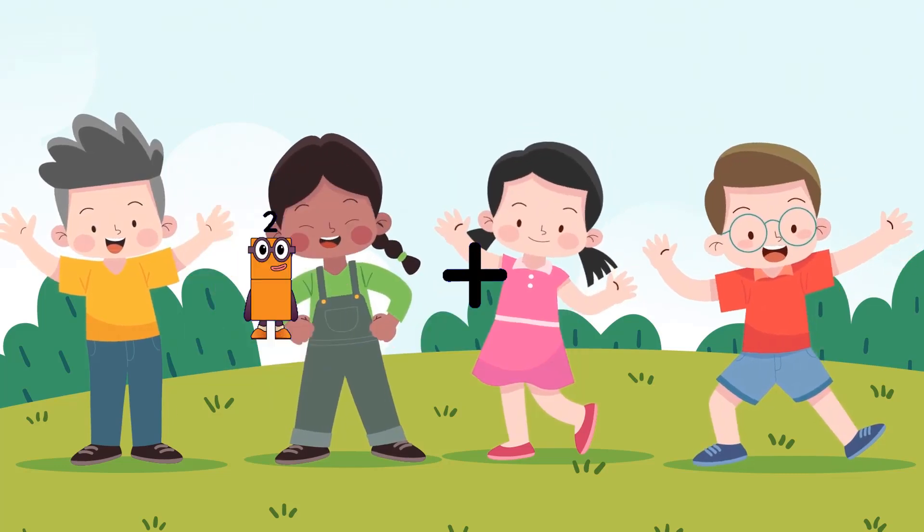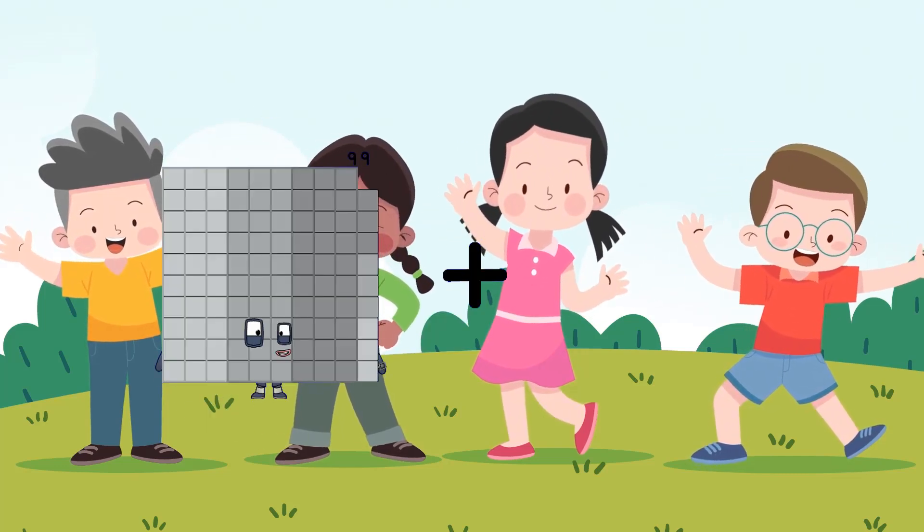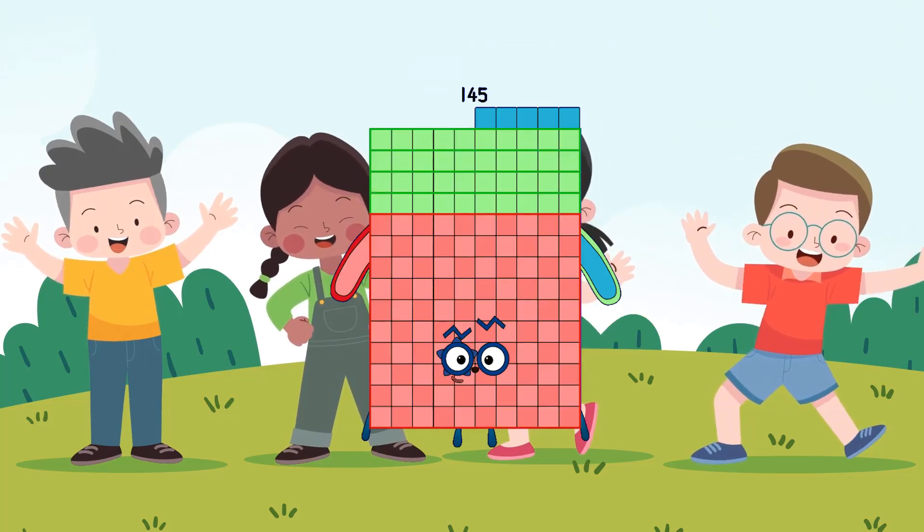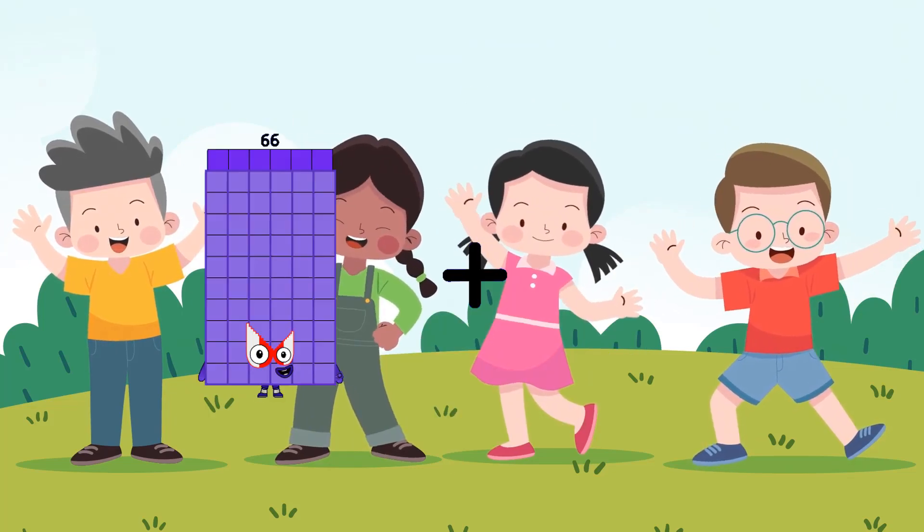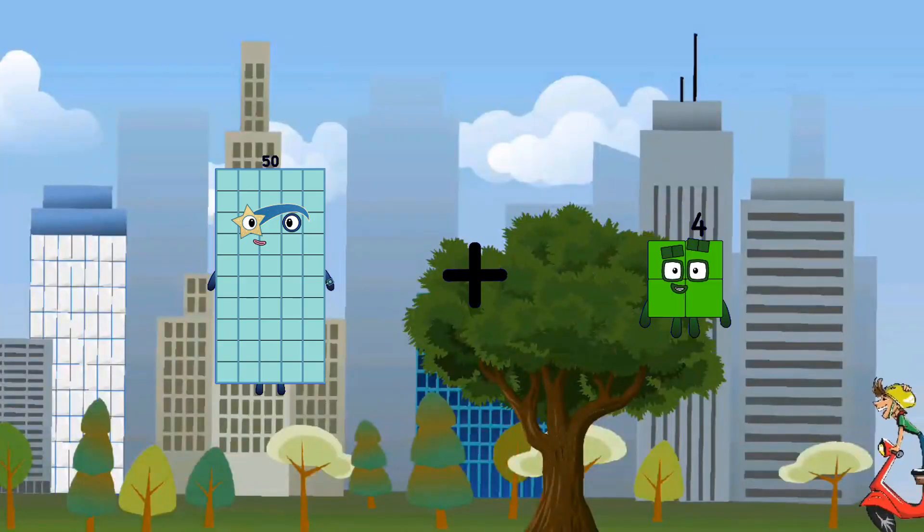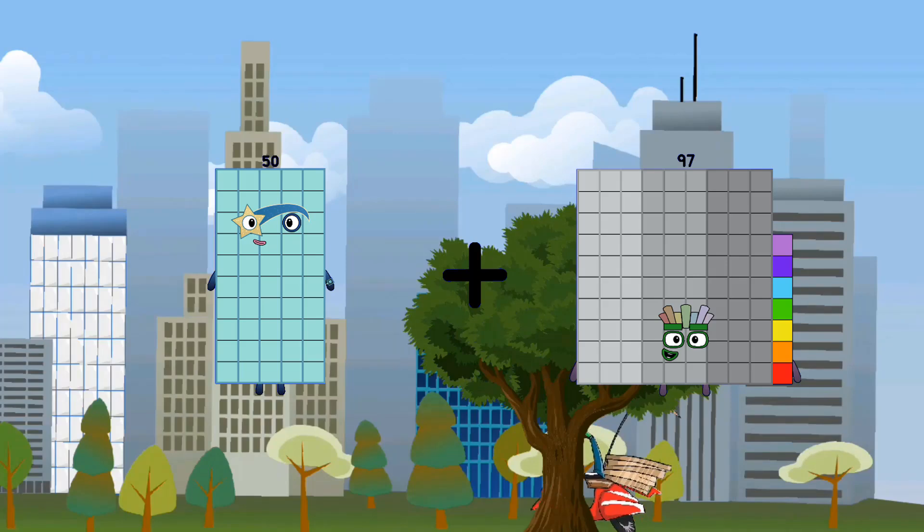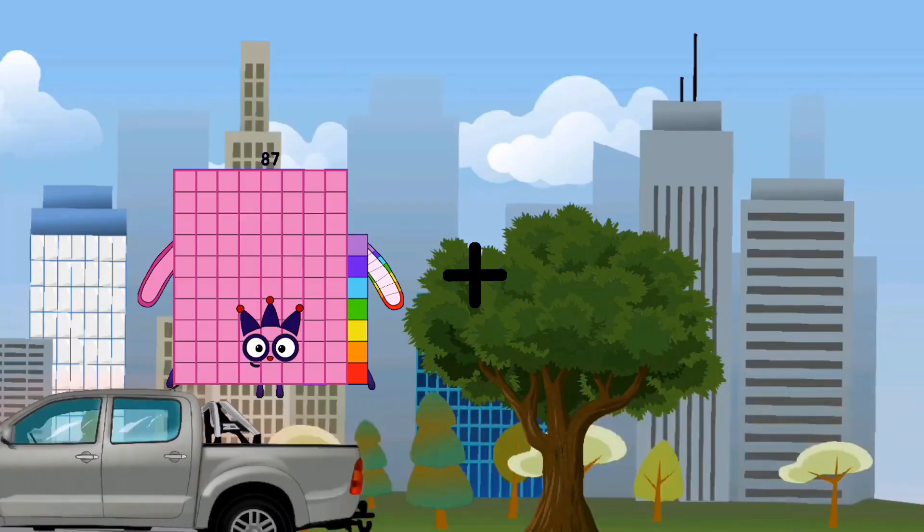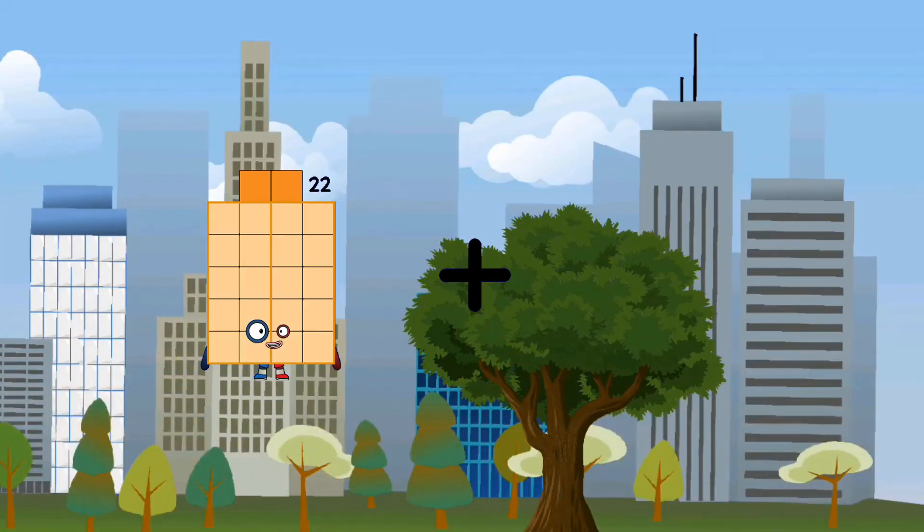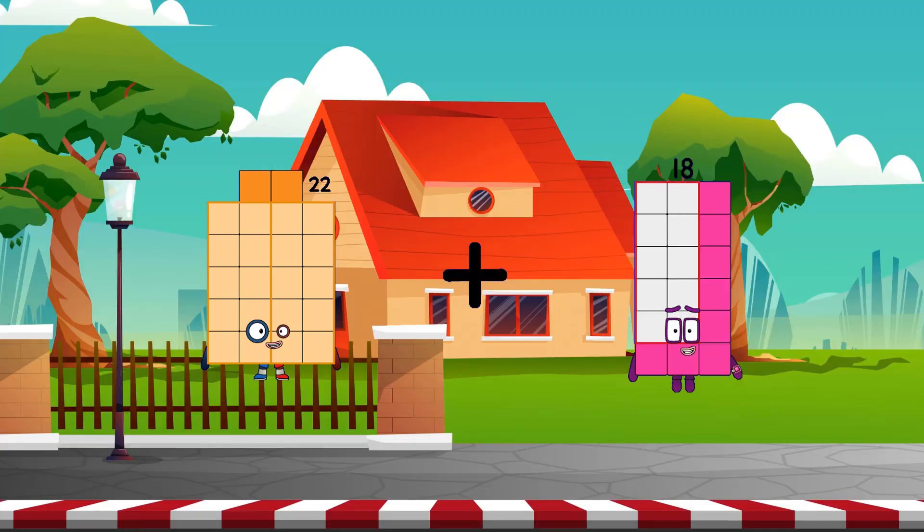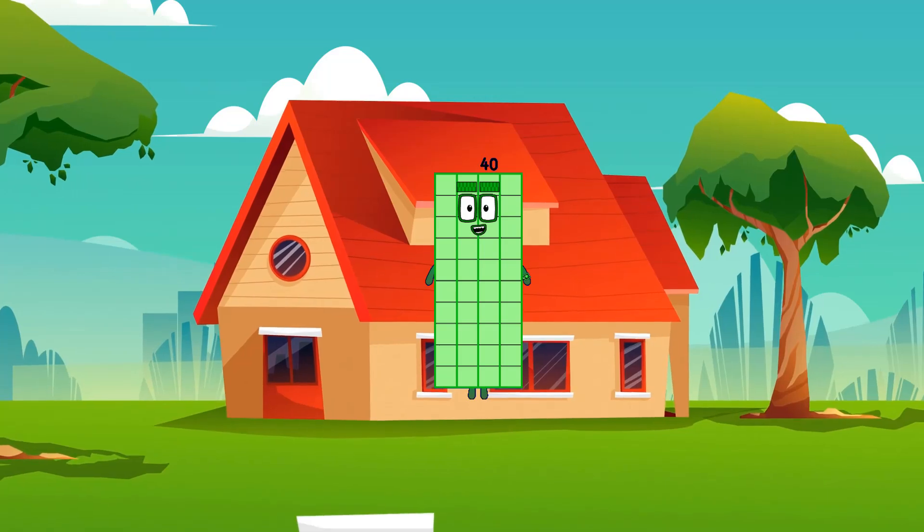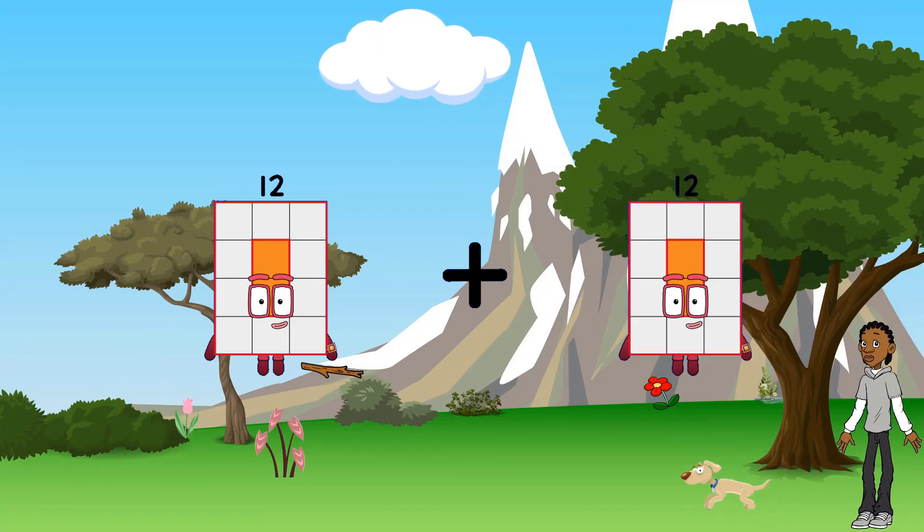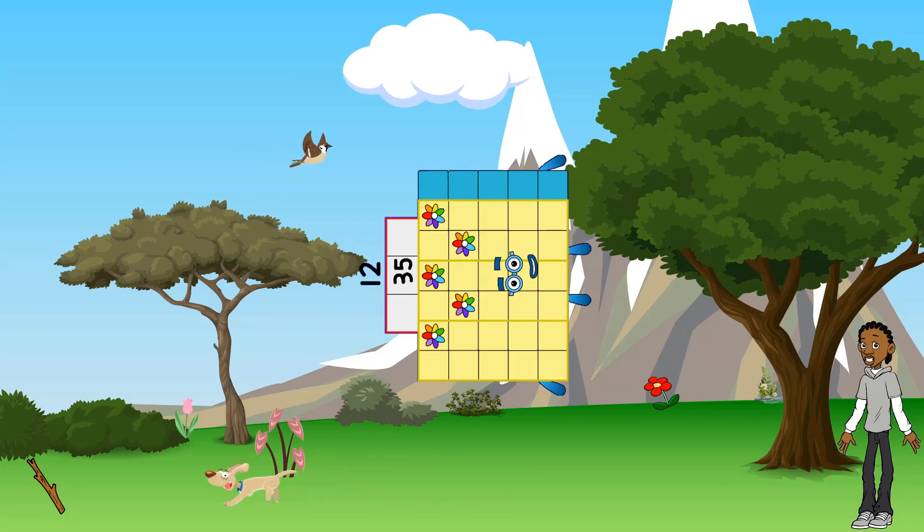99 plus 46 equals 145. 50 plus 97 equals 147. 22 plus 18 equals 35 equals 47.